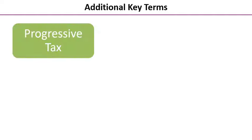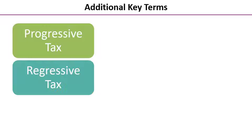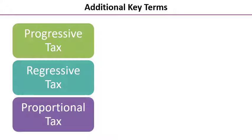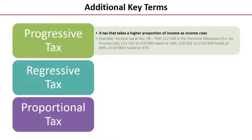A few more key terms: progressive tax, regressive tax, and proportional tax — you may have met these in your microeconomics when looking at market failure. Progressive tax is a tax that takes a higher proportion of income as income rises. The example given relates to income tax in the UK — take a moment to read through the various tax bands shown on screen.